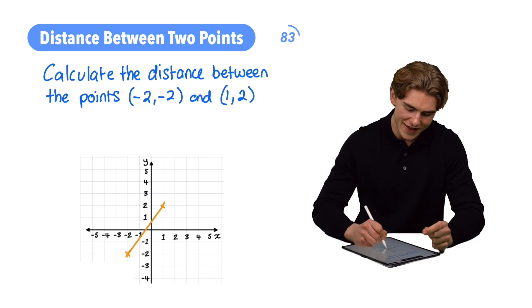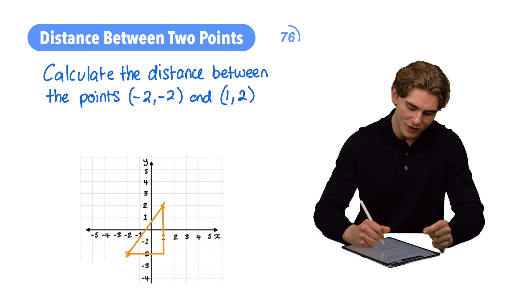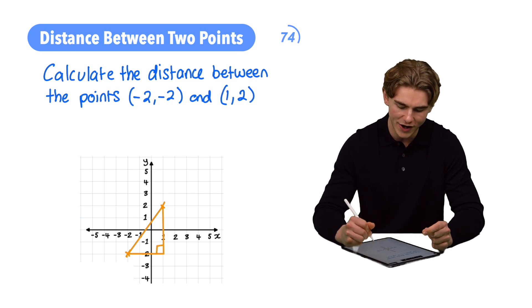We're going to draw a line which represents the x distance between the two points, and another line which represents the distance in y between the two points. Can you see where this is going? We've actually drawn a right-angled triangle there.